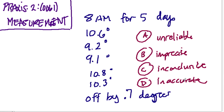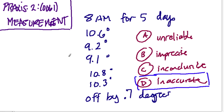The answer here is that this data is inaccurate — because it's not the actual values. What's confusing and really difficult here, and I think frustrating, is we're looking at synonyms pretty much: unreliable, imprecise, inconclusive, and inaccurate. The one I can clearly see that's not the case is inconclusive, because the data is always off by 0.7 degrees. You can either add or subtract 0.7 from all these values — you can still make conclusions about this data.